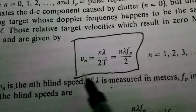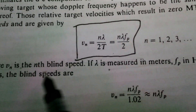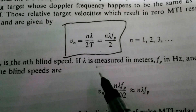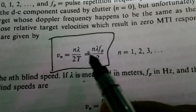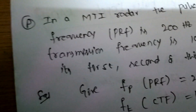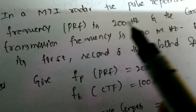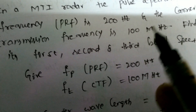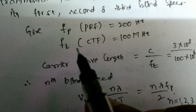This is the blind speed formula, where vn is the nth blind speed and n is varying from 1, 2, 3, and so on. If the question asks to determine the first and second blind speed, simply set n equal to 1 or 2. Consider this example: in an MTI radar, the pulse repetition frequency fp is 200 Hz and the carrier transmission frequency ft is 100 MHz. Find the first, second, and third blind speed.